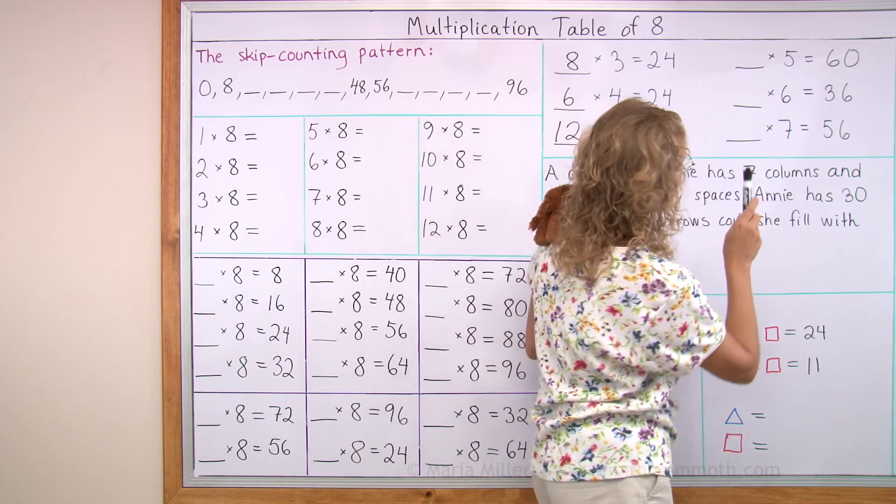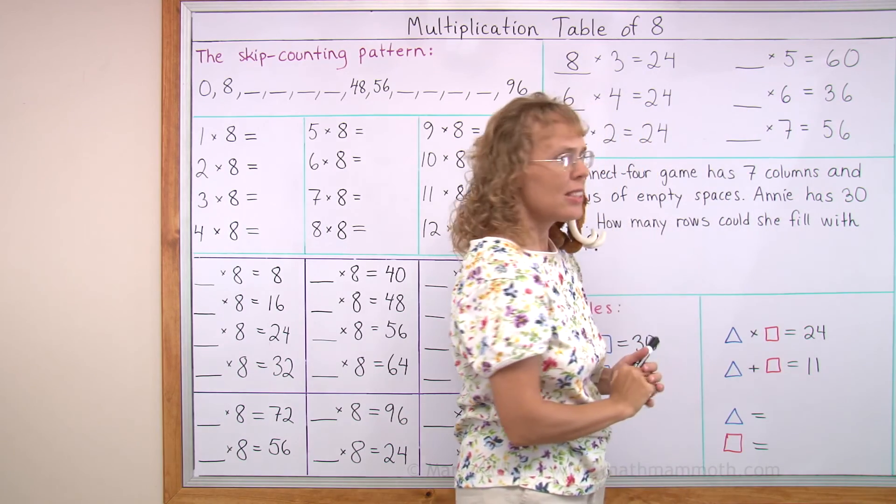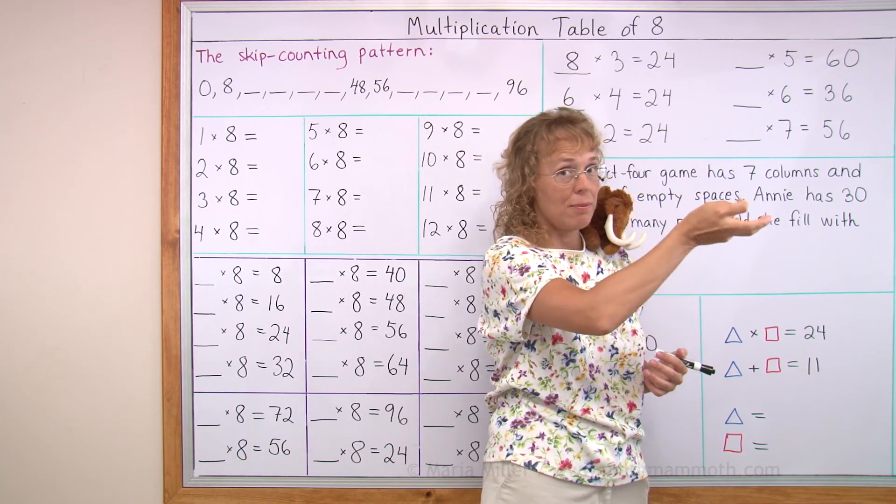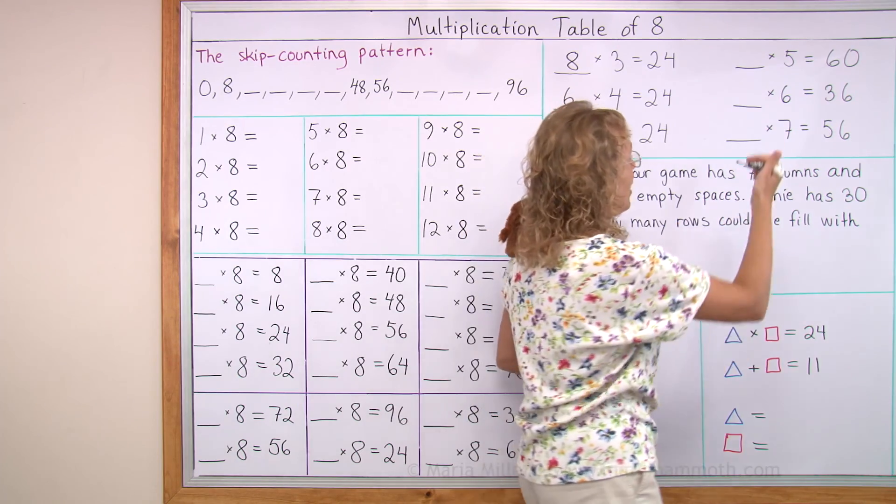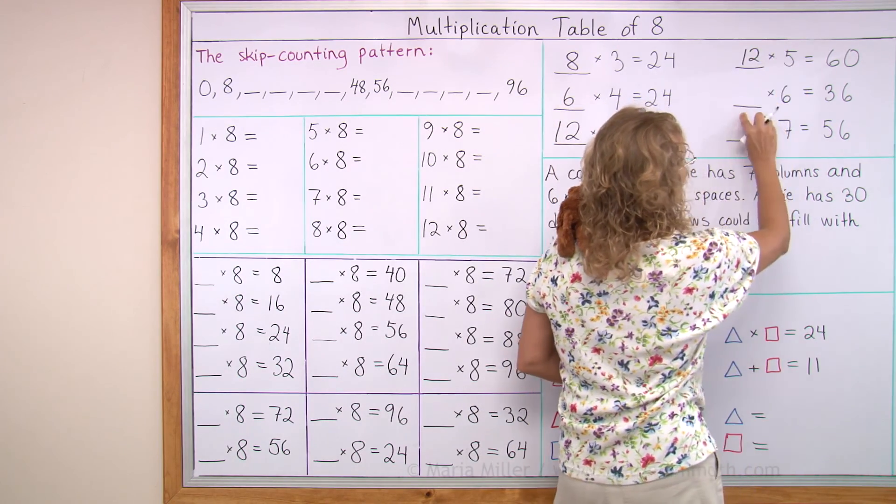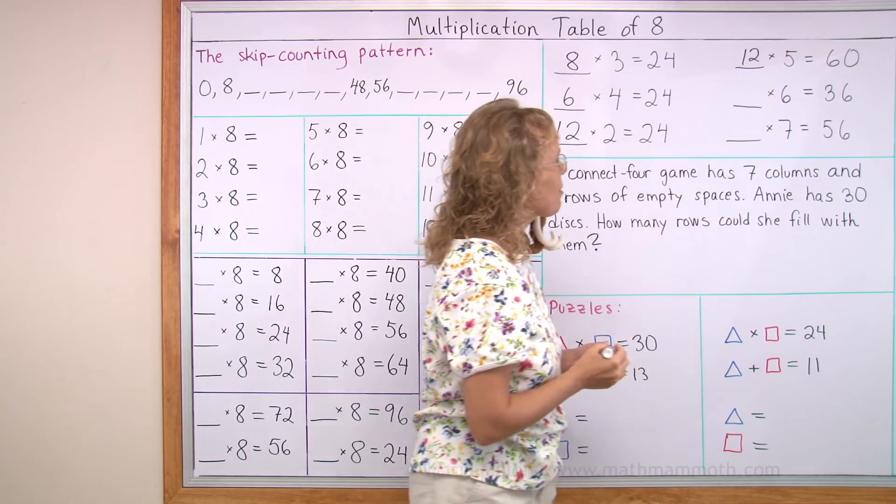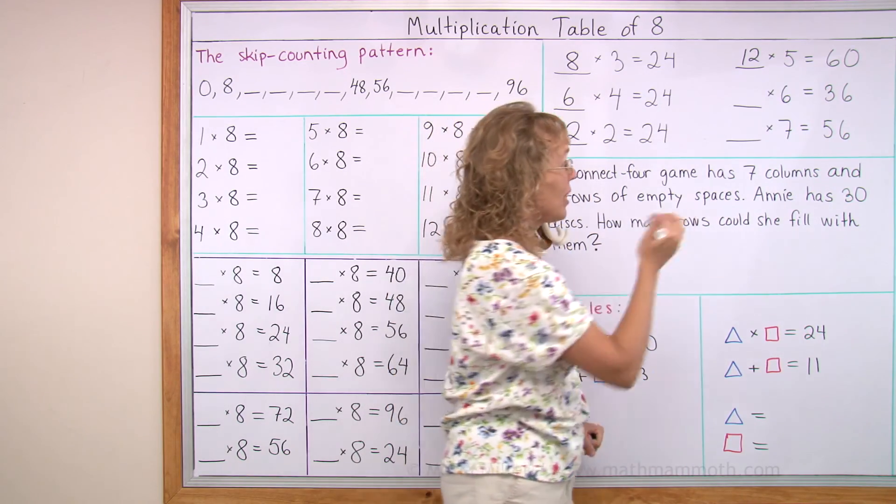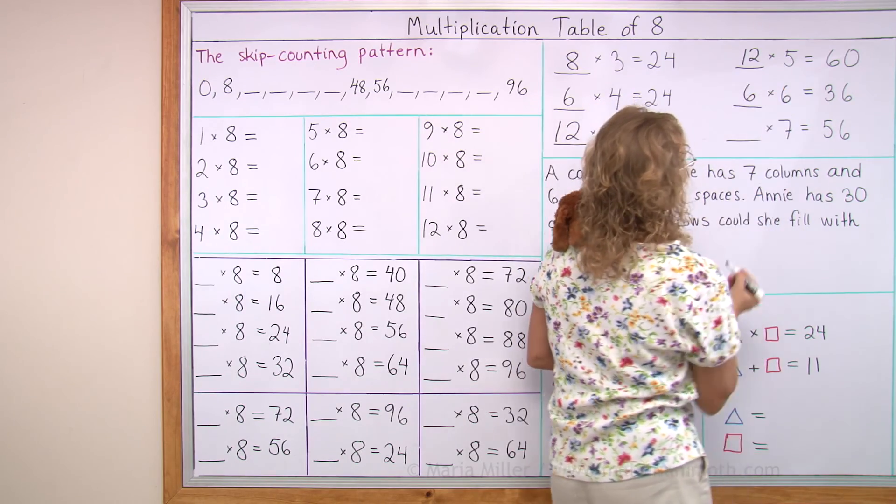How about these? Can you solve these? How many times 5 makes 60? 10 times 5 would make 50. It's more than that. It's 12. How many times 6 makes 36? That's the one that rhymes, do you remember? 6 times 6 equals 36.